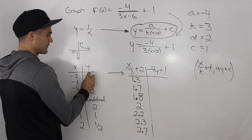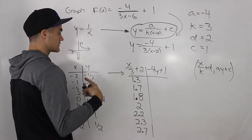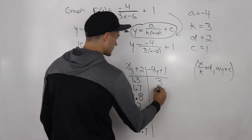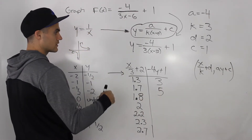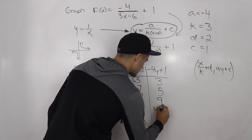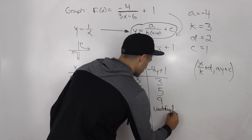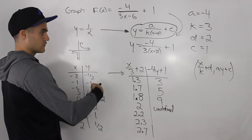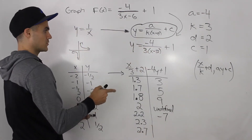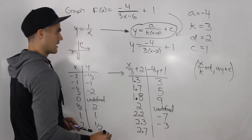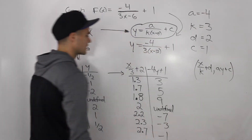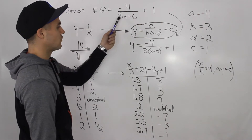For the y values: -1/2 times -4 gives +2, plus 1 gives 3. Then -1 times -4 is +4, plus 1 gives 5. Then -2 times -4 is 8, plus 1 gives 9. The undefined value stays undefined. Then 2 times -4 plus 1 gives -7; 1 times -4 plus 1 gives -3; and 1/2 times -4 is -2, plus 1 gives -1. Now we have a complete table of values for this function.